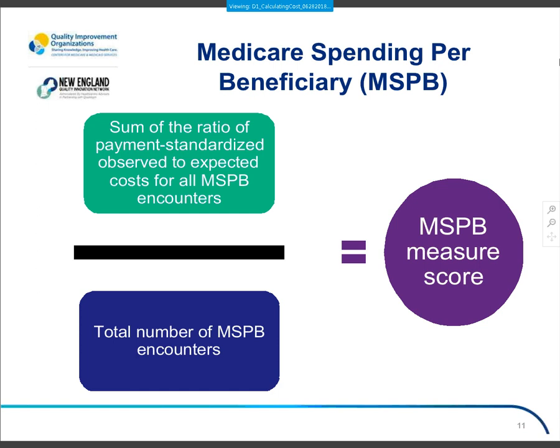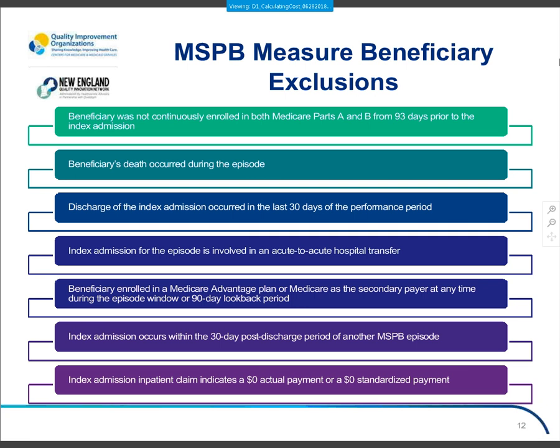The Medicare Spending Per Beneficiary measure is the sum of the ratio of payment-standardized observed-to-expected costs for all MSPB encounters over the total number of those encounters. There are a number of exclusions to consider as you figure out who falls into your MSPB episodes — a couple of key beneficiary exclusions to take into account.